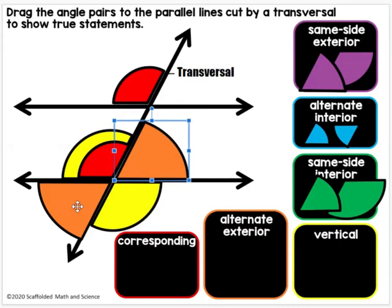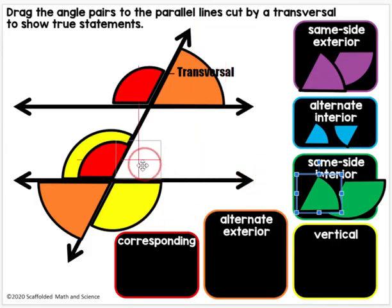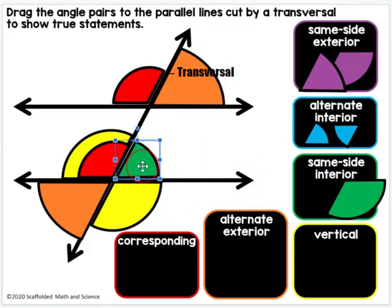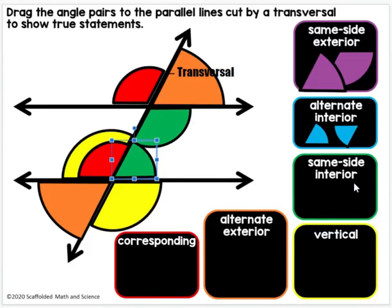Now these two orange would be vertical angles. Next is same side interior. They're on the same side of the transversal and they're both inside the parallel lines. That's what makes them interior. So they're same side of the transversal and they're inside the parallel lines. So they're same side interior.